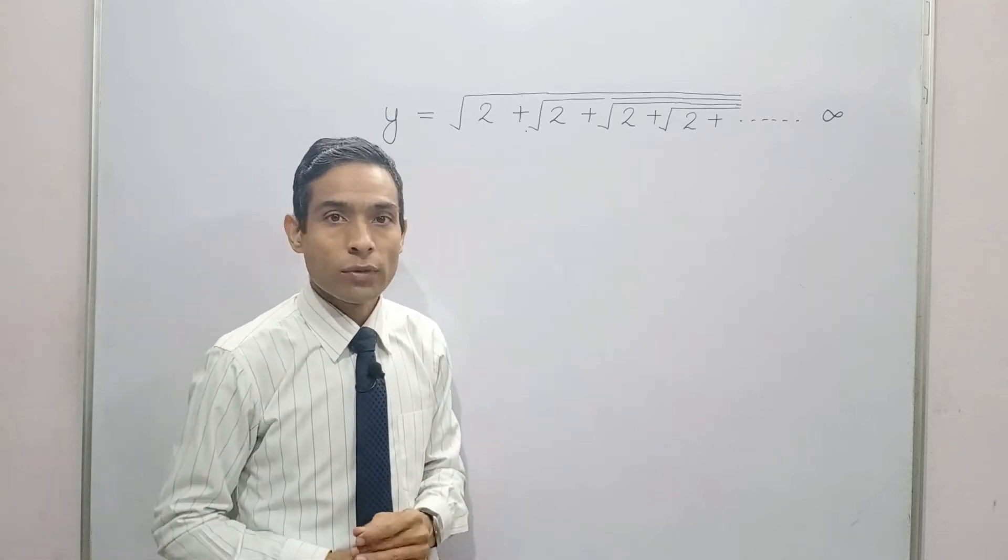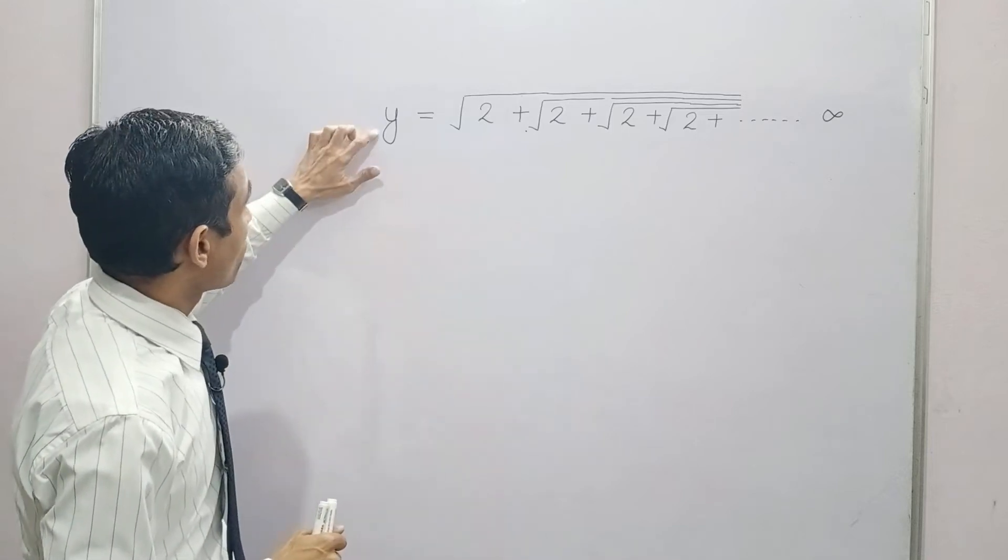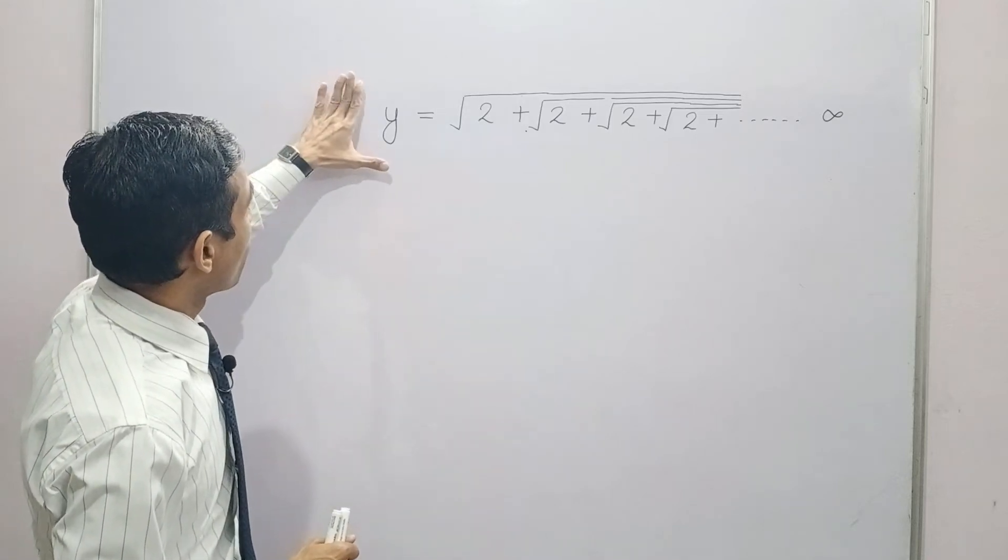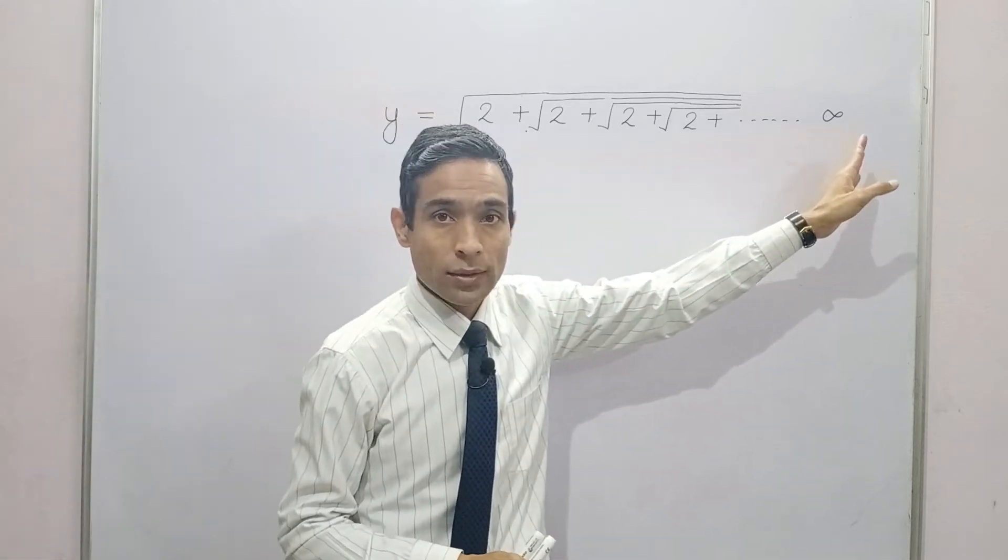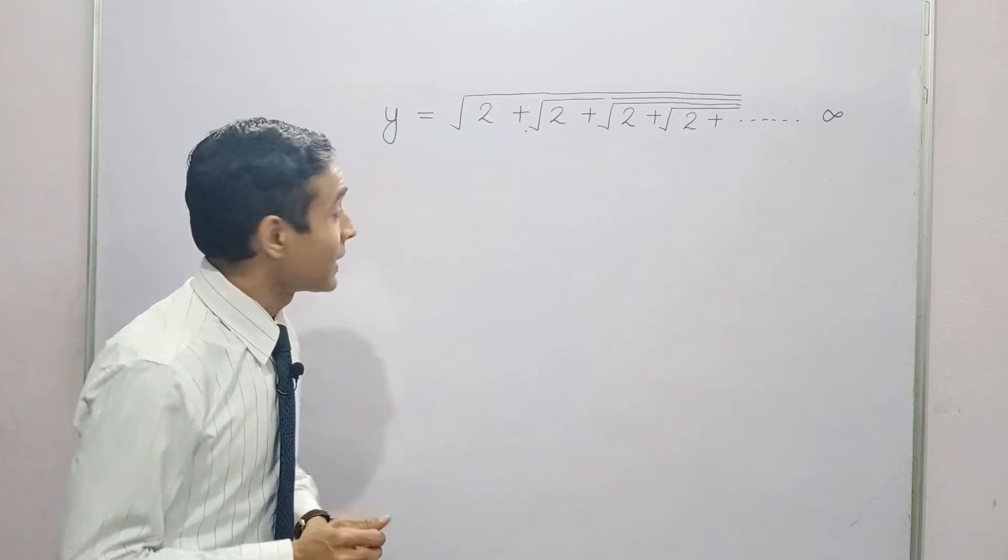Let's find out how to solve this question. In this we have an equation in which we have y on the left hand side and square root of two values going infinitely on the right hand side. So let's closely see this.